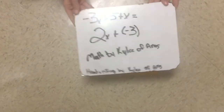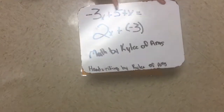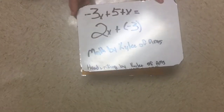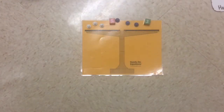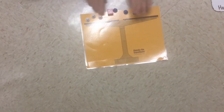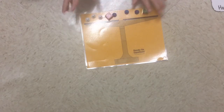The next problem we are doing is negative 3x plus 5 plus x equals 2x plus negative 3. So the first thing we are going to do is take away the same thing from each side.